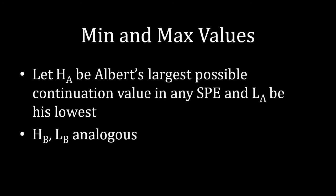The trick we're going to use is figuring out the minimum and maximum continuation values for each player. We let H_A be Albert's largest possible continuation value in any subgame perfect equilibrium, and L_A be his lowest. H_A represents the best possible payoff for Albert across all equilibria, and L_A represents the worst. We have the same sort of continuation values for Barbara: H_B is her best possible continuation value in any subgame perfect equilibrium, and L_B is her lowest.